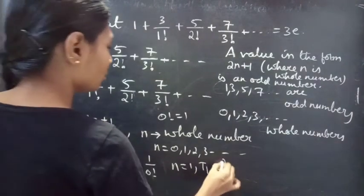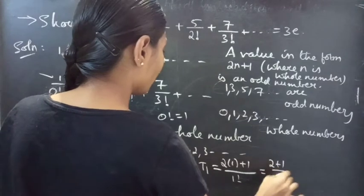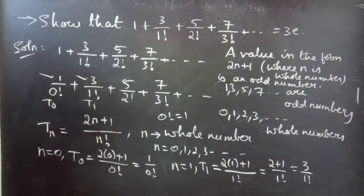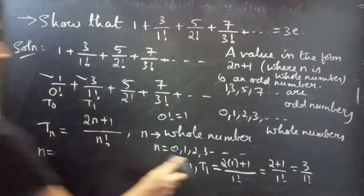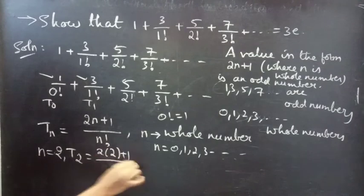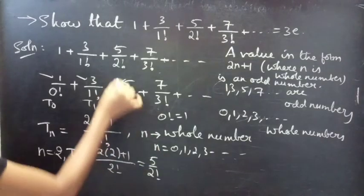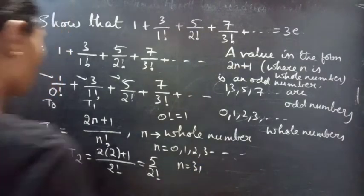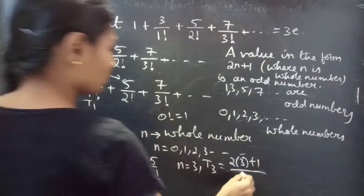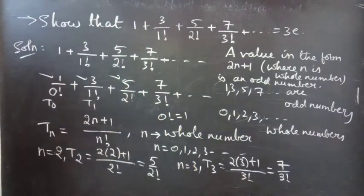For n equals 1, t₁ = (2+1)/1! = 3/1!. For n equals 2, t₂ = (2×2+1)/2! = 5/2!, which is the third term. Likewise, for n equals 3, t₃ = (2×3+1)/3! = 7/3!, the next term. So the nth term formula is correct.